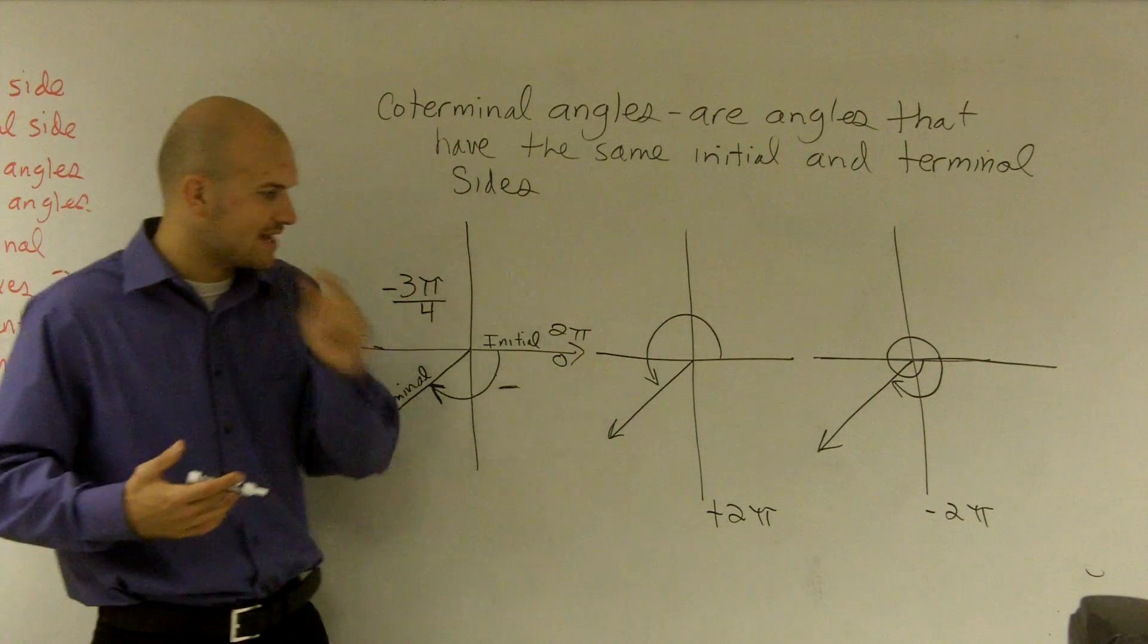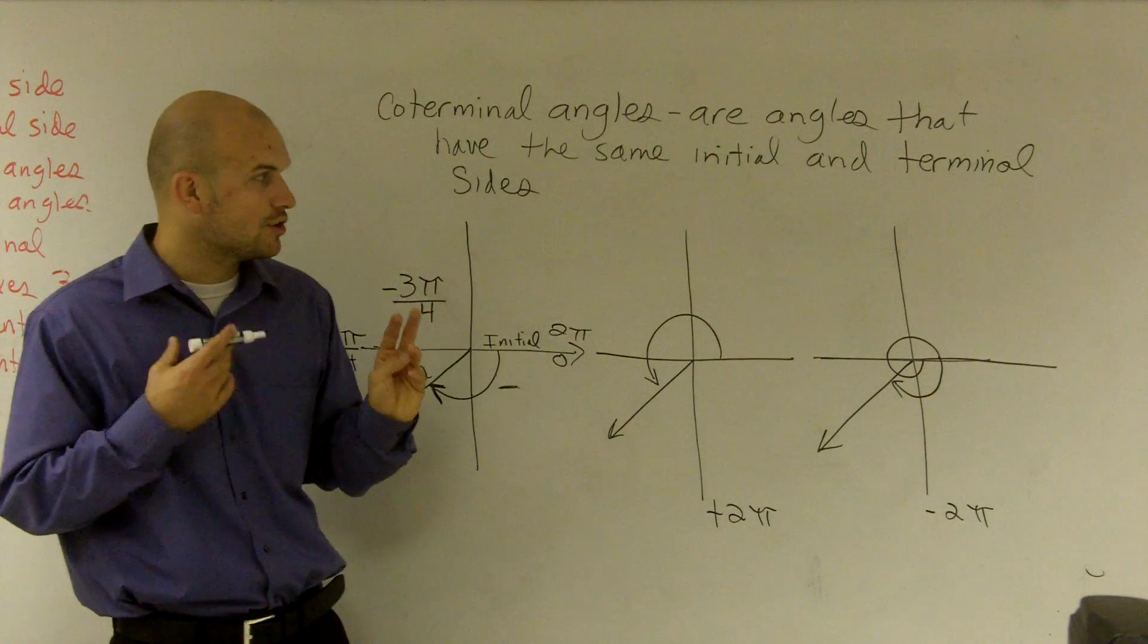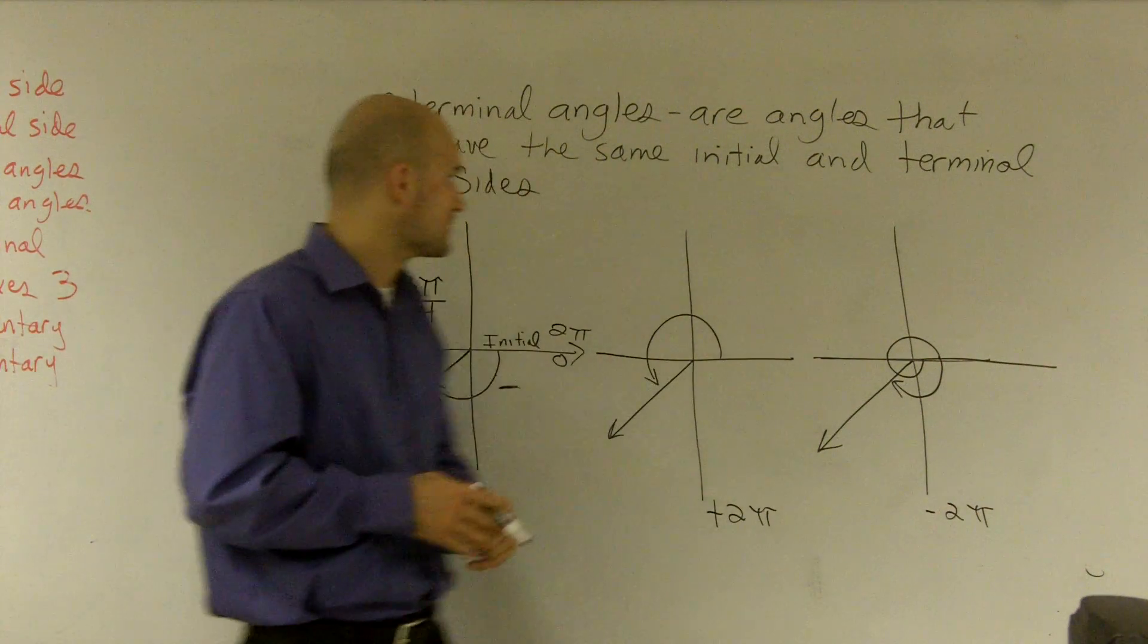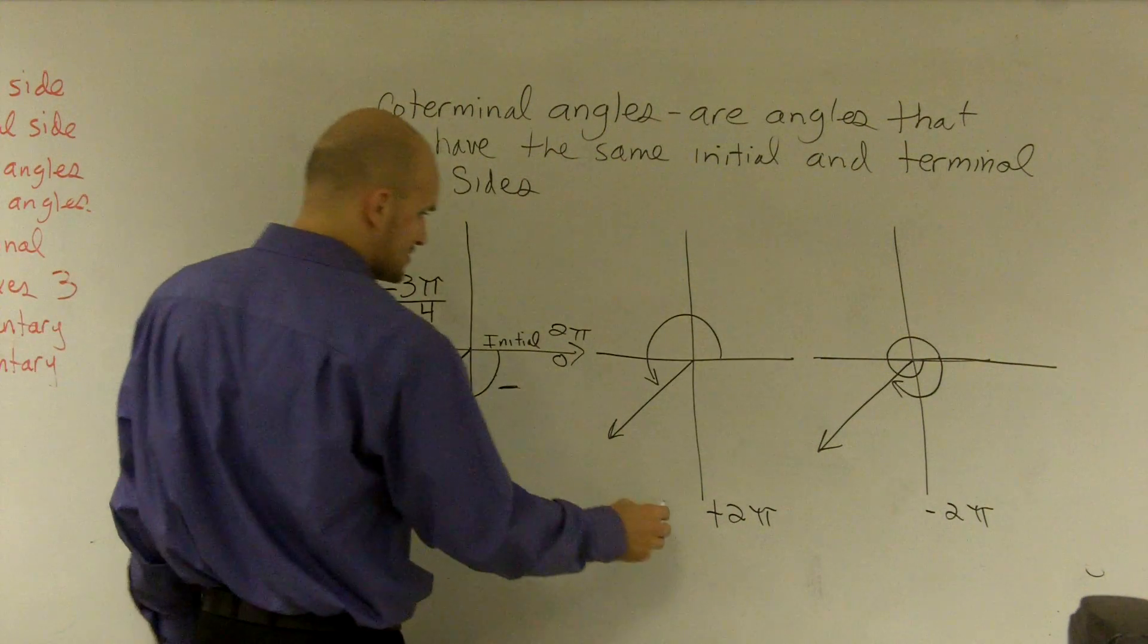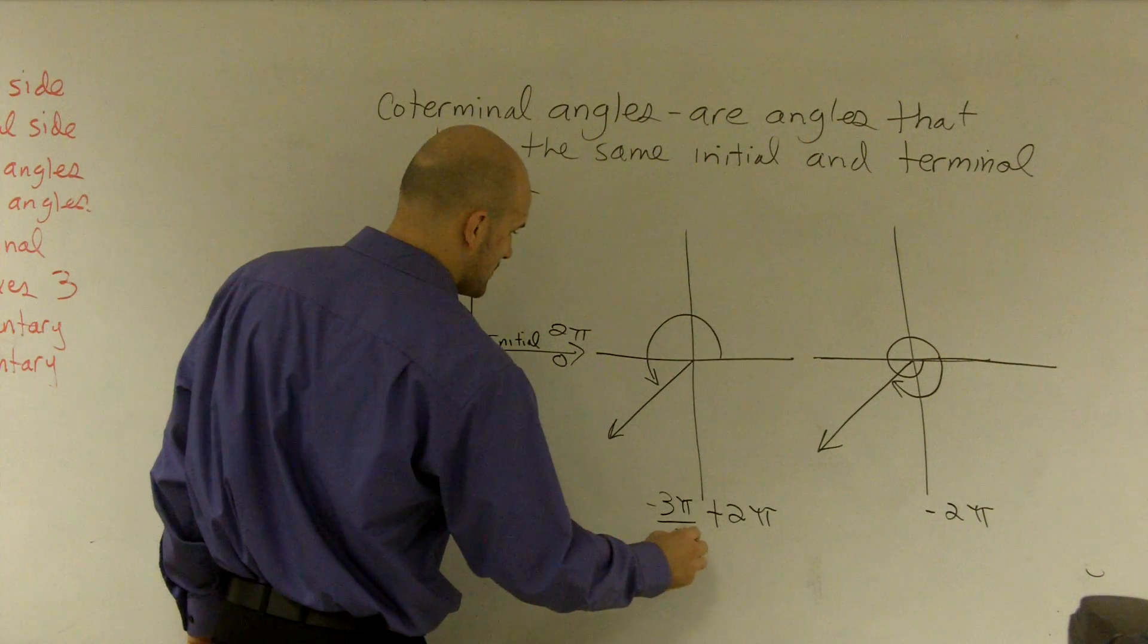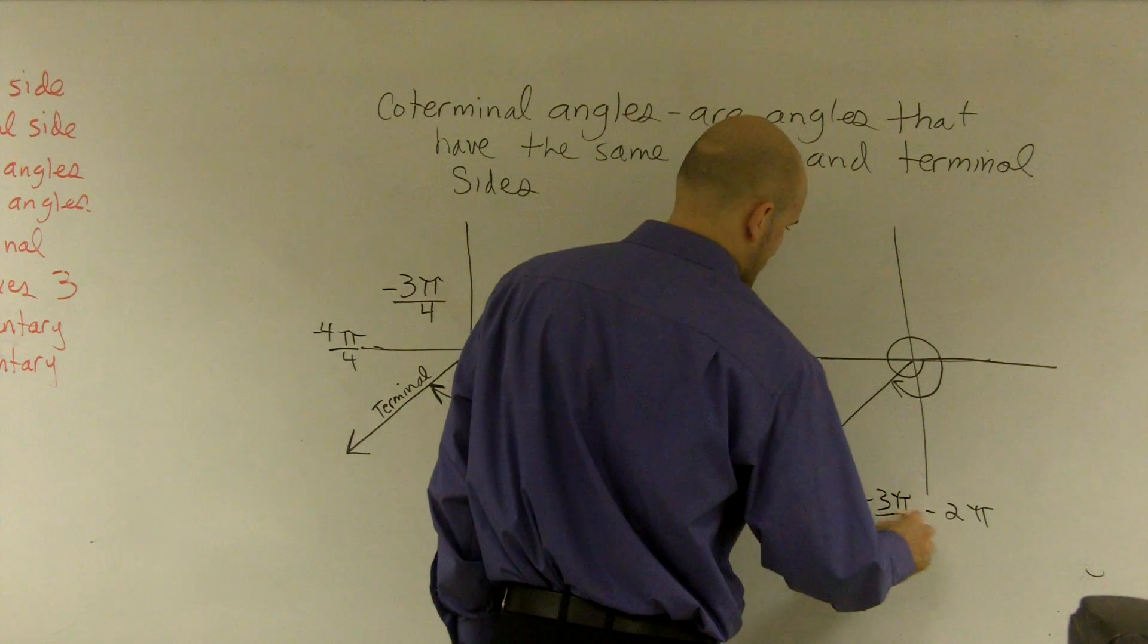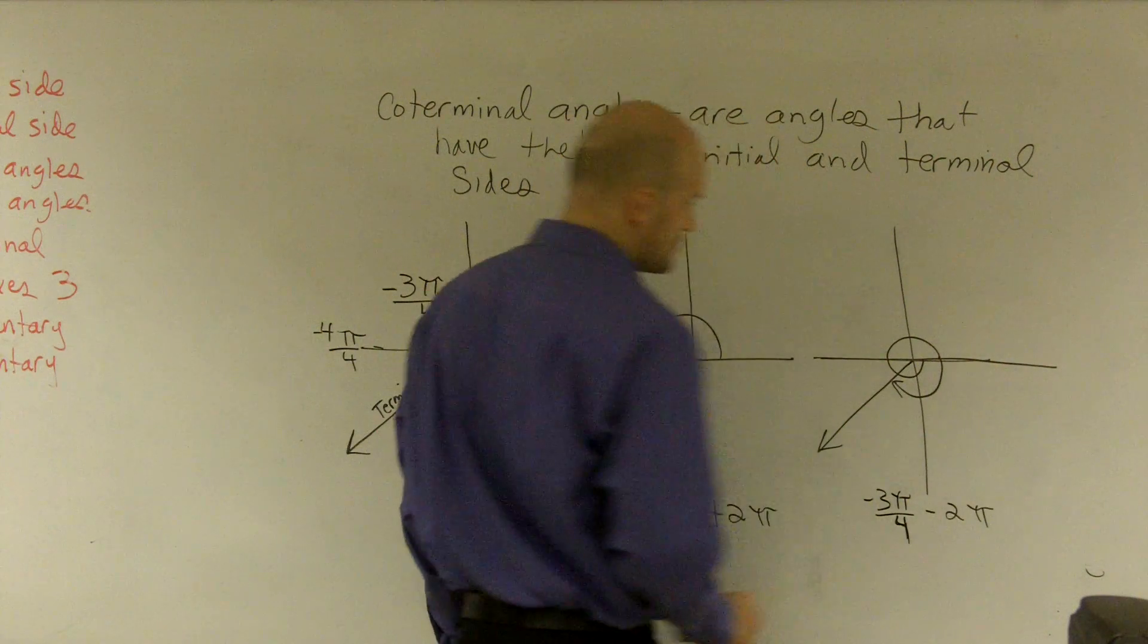So how we can find our two coterminal angles is to add 2π and subtract 2π. So all you need to do is take your angle, which is negative 3π over 4, add 2π, and subtract 2π.